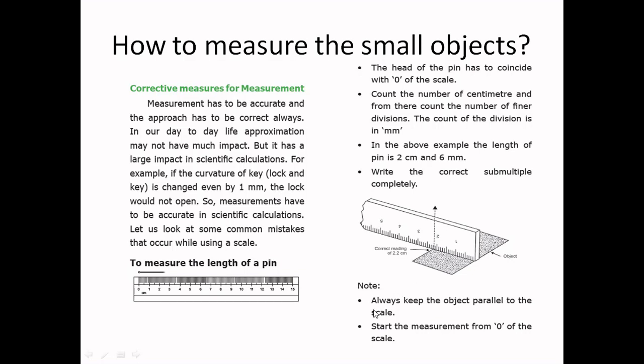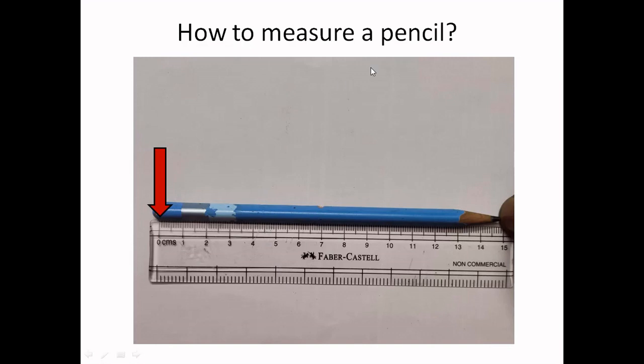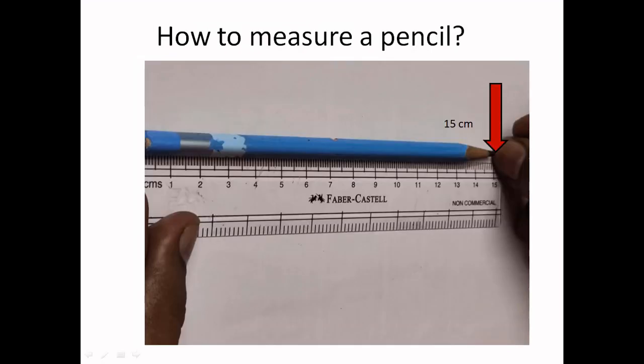So always we need to keep the object parallel to the scale and start the measurement from 0. This is the basic rule to measure. So how to measure the pencil? We will start with 0 in centimeter scale. So the tip of the pencil ends in 15, so that it is 15 centimeters.